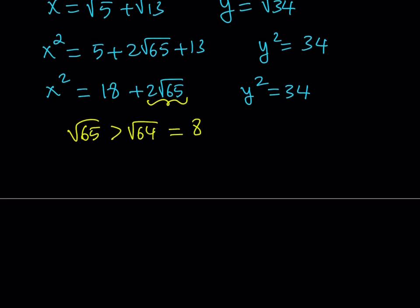So let's go ahead and multiply both sides by 2. 2 times the square root of 65 is greater than 2 times 8, which is 16. And then if you add 18 to both sides, 18 plus 2 times the square root of 65 is going to be greater than 18 plus 16, which is 34. So now we know that 18 plus 2 times the square root of 65 is greater than 34.